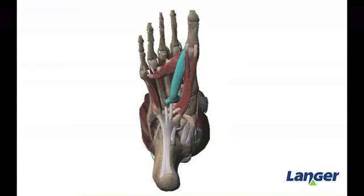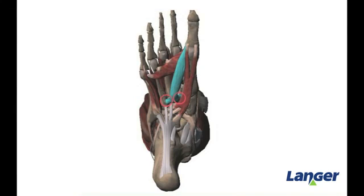The oblique head originates both on the base of metatarsals 2–4 and also on the peroneus longus tendon. The insertion point is on the base of the proximal phalanx. The function of the adductor hallucis muscle is to adduct the great toe.